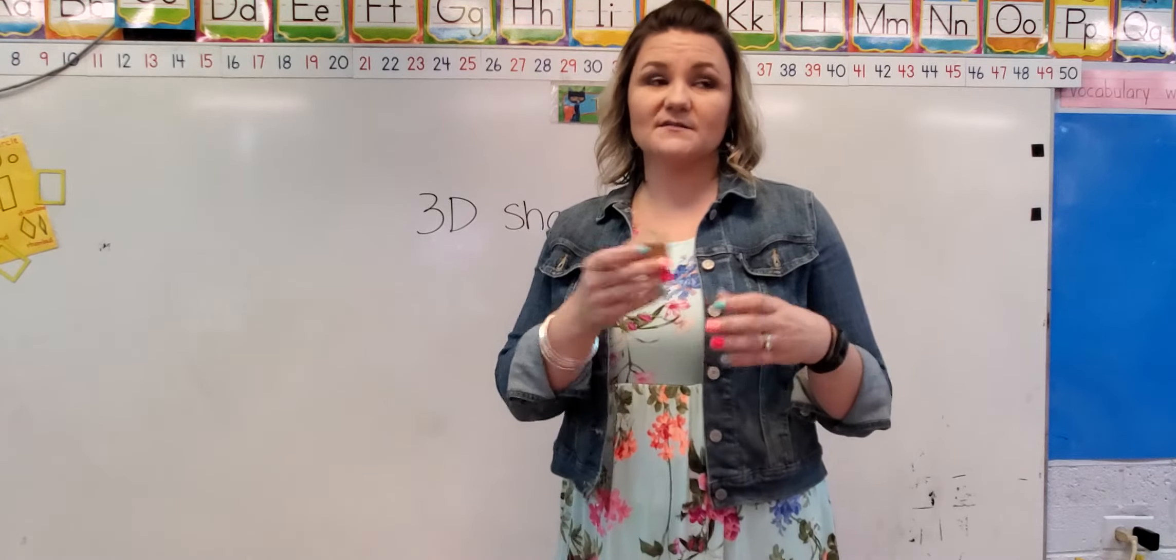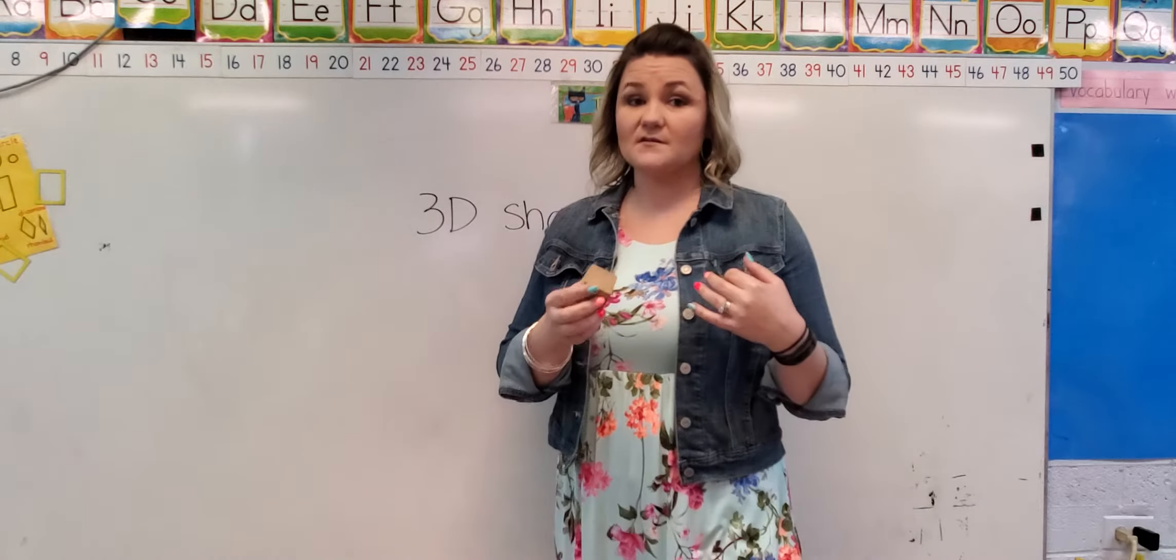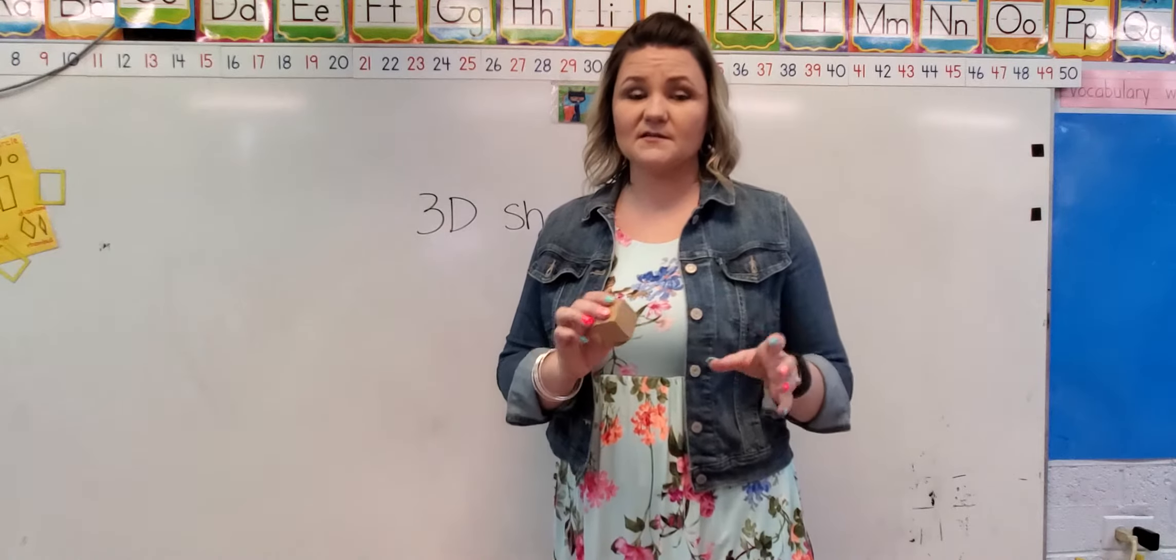Corners are where they meet. Sides are the flat parts. So we got faces, sides, corners. 3D shapes are obviously more complex, so they're a little bit harder to describe.